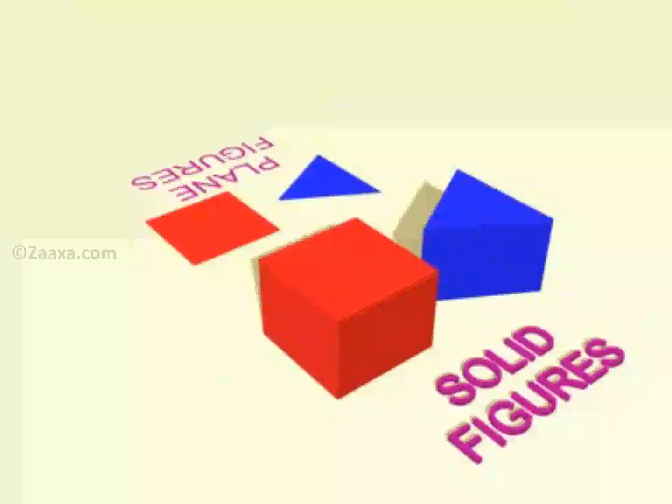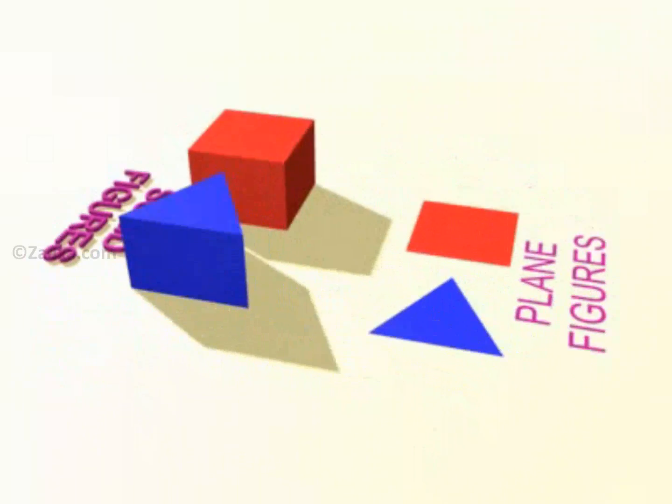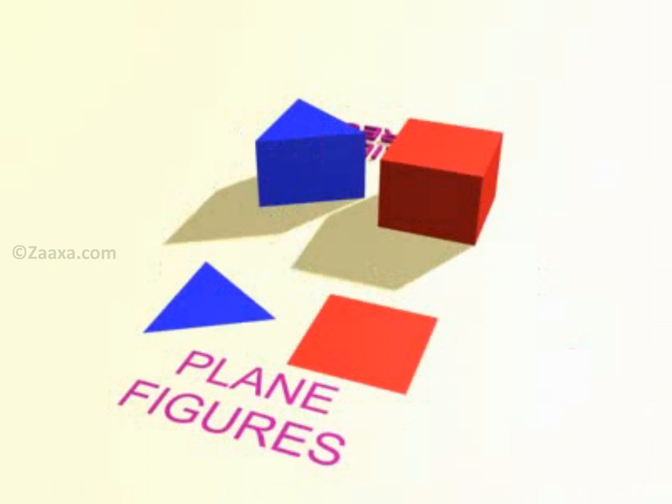Plane figures, like the square and triangle, just occupy some area. But solid objects occupy a certain volume of space.